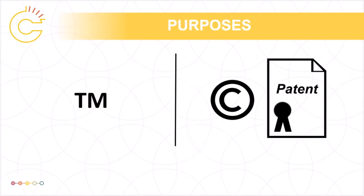As you can tell from these examples, trademark protection is primarily about protecting reputation, whereas patents and copyright are primarily about providing creators or inventors with an incentive for distributing their works. These different justifications for IP protection help distinguish between trademarks on one hand and patents and copyrights on the other.